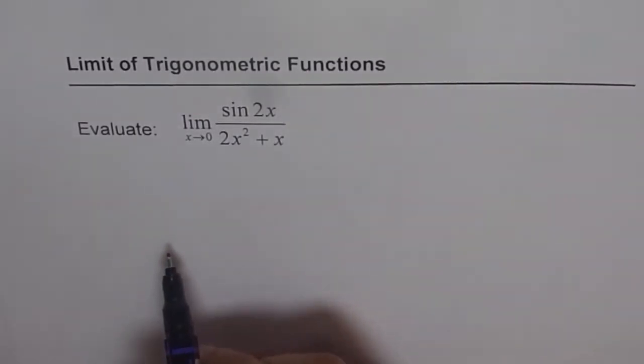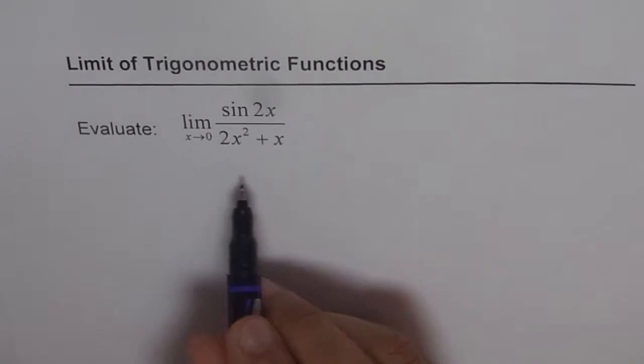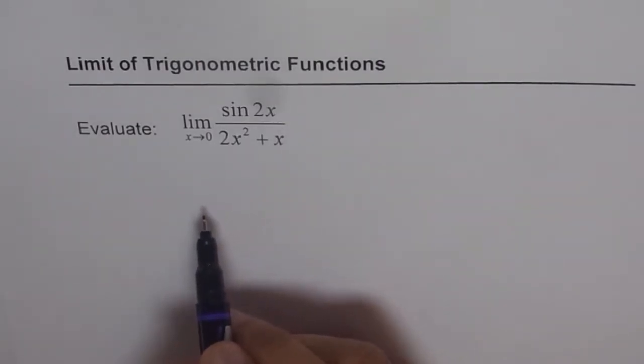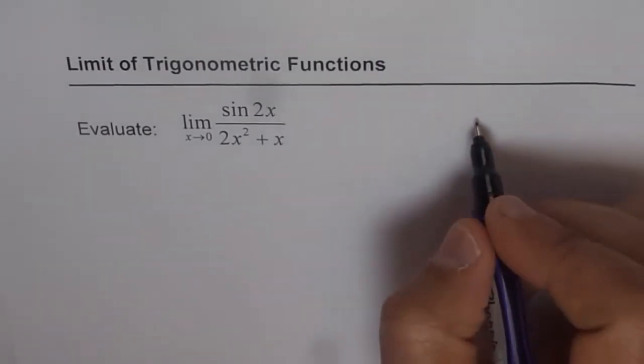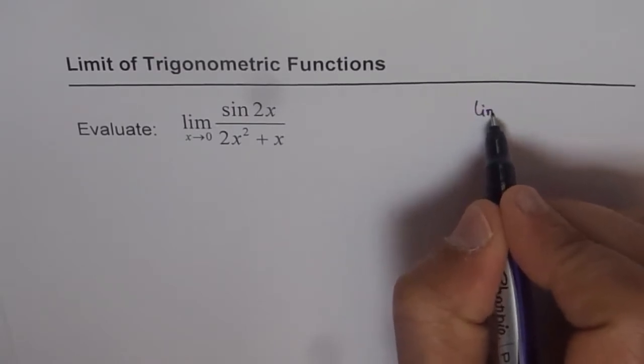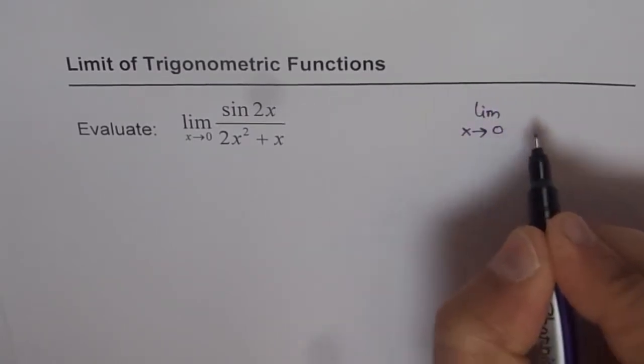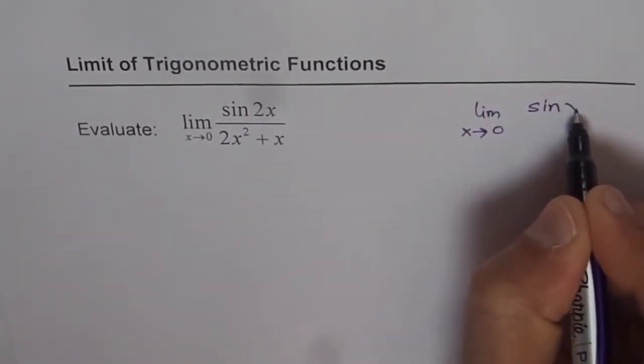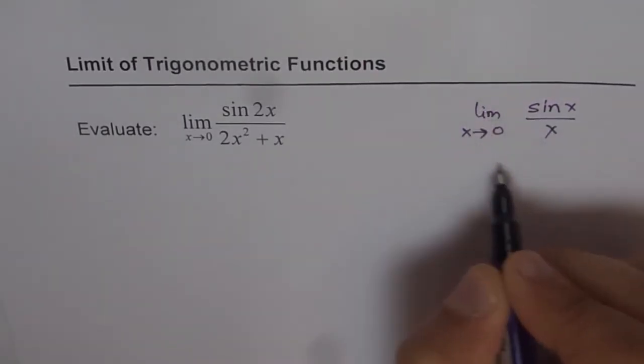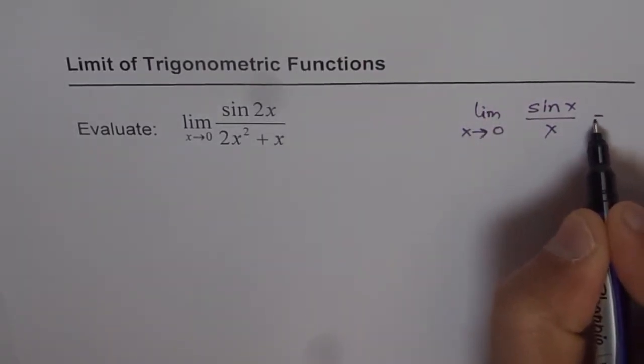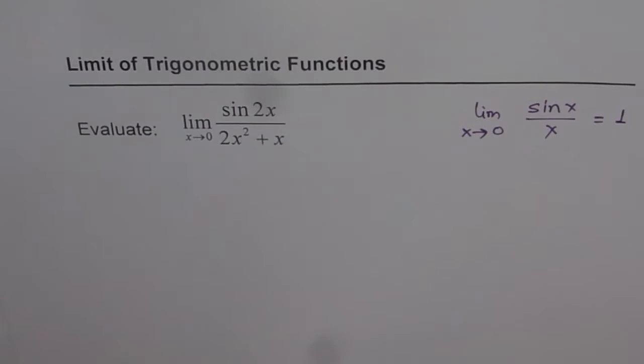For all such questions, we try to simplify the expression to get something like limit x approaching 0 of sin(x) over x. Since we know this fundamental limit equals 1, that is the strategy for us.